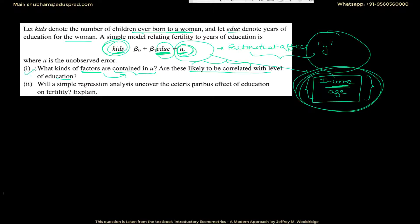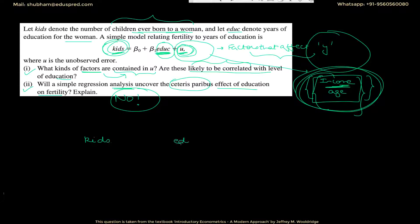Now let's move to the second part of the question: will a simple regression analysis uncover the ceteris paribus effect of education on fertility? The straightforward answer is no. Consider 'kids', 'EDUC', and U — which contains variables like income, age, etc.